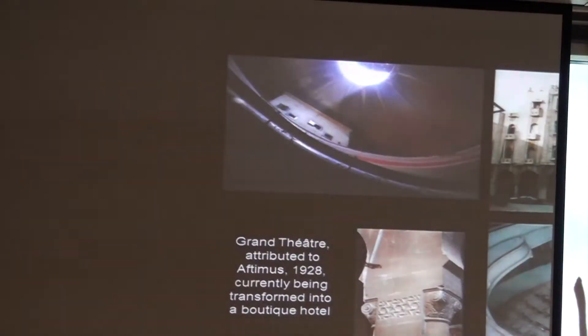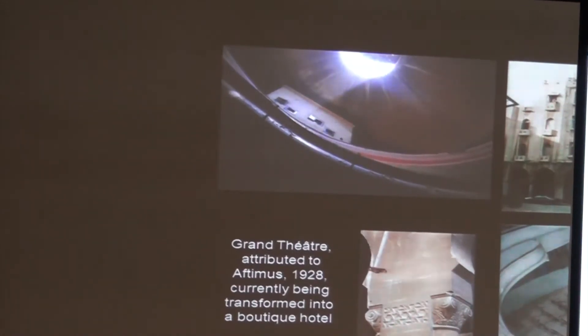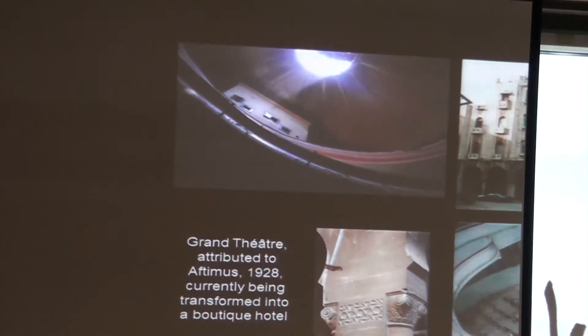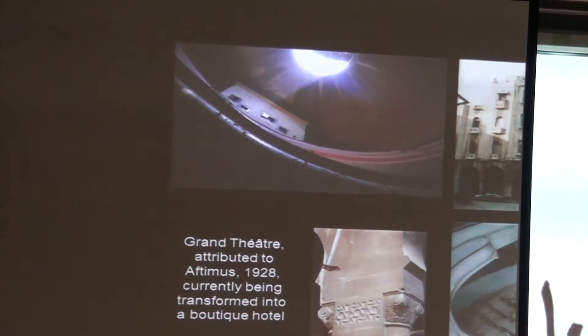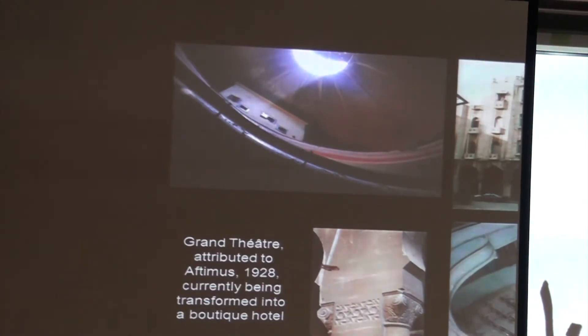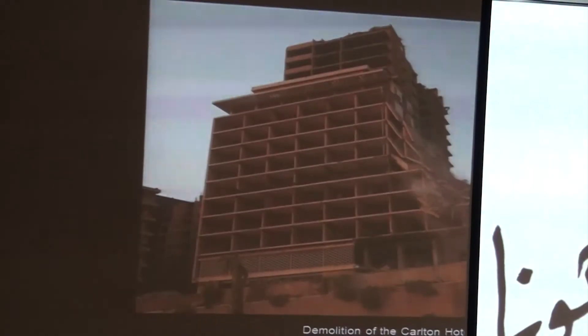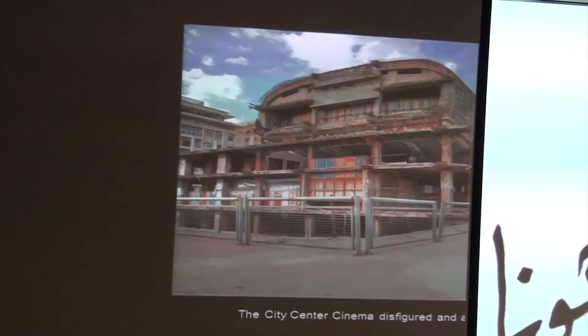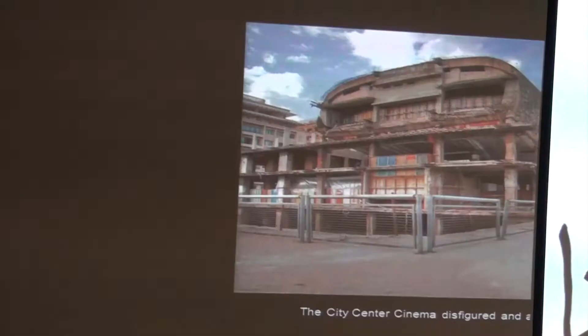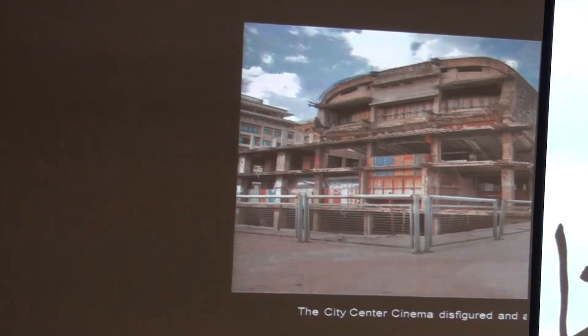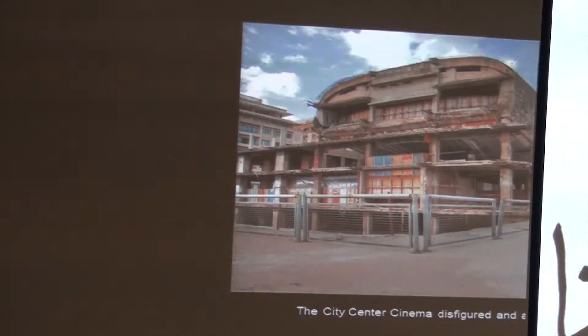There is a lot of confusion about what identity is about. With reconstruction, we have projects like the grand theater — with all its amazing activities and elegance — going to be transformed into a boutique hotel. You also have the demolition of hundreds if not thousands of buildings like Hotel Carlton, and the transformation of avant-garde structures like the city center cinema, which is awaiting further transformation.